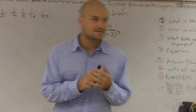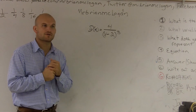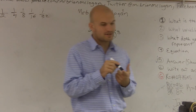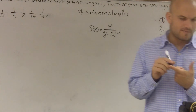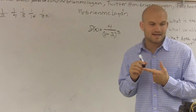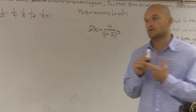So it says number six — here's our function. They ask us a couple of questions. They say find the domain of the function and identify any horizontal or vertical asymptotes.